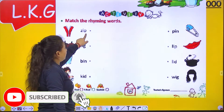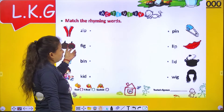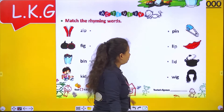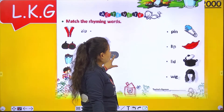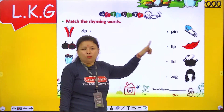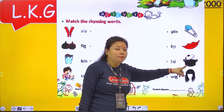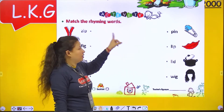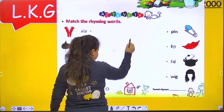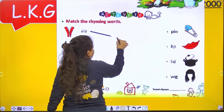Now this is zip. Z-I-P, zip. So like zip, we have to search and find out the rhyming word. Zip and lip — both have the same sounds. Zip, lip. Dono ki sound same hai. Then we have to match zip with lip.